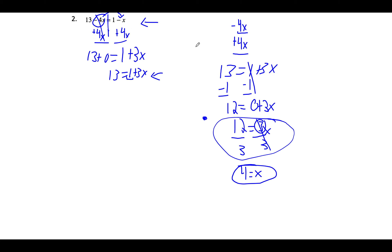Looking at our next problem, we have 13 minus 4x equals 1 minus x. Once again, we want to get rid of variables on one side of the equation, so we add 4x to both sides, thereby eliminating 4x from that side. That gives us 13 equals 1 plus 3x. We then subtract 1 from both sides to get 12 equals 3x, and divide both sides by 3 to get 4 equals x. The key was to eliminate variables on one side, then move them all to the other side.